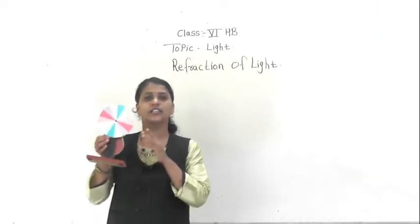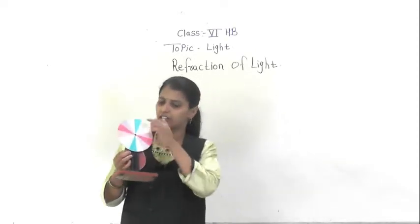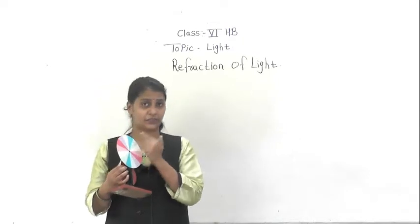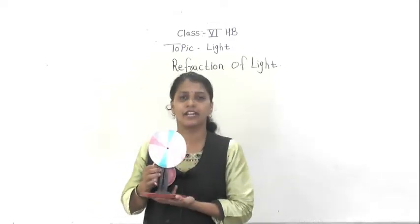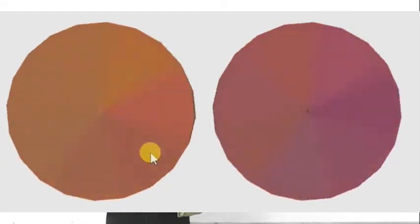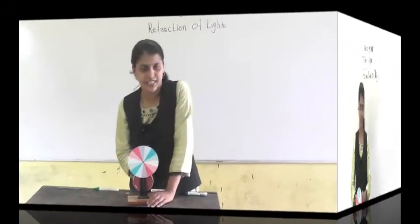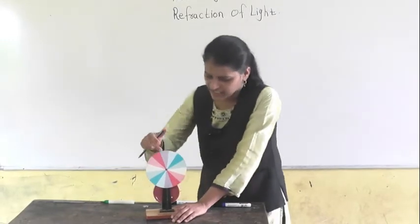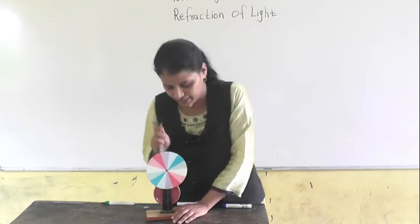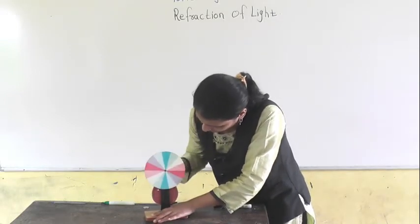Now see, this is a Newton's disc. You can see the seven different colors on it. When I rotate this, it will convert into white color. Let's see — you can see the different spectrum of colors on the disc, and when I rotate it, the white color is formed.